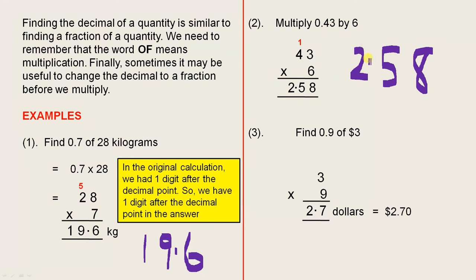There are two digits after the decimal point. In the answer, there are two digits after the decimal point. So that's why it's 2.58.